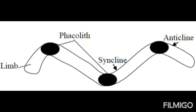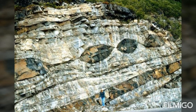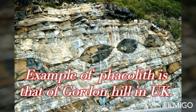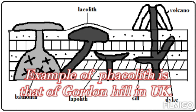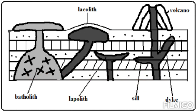The other feature is the phacolith. The phacolith is an intrusive feature found in both anticline and syncline structures. It is formed when the magma cools and solidifies in both anticline and syncline settings. This feature is formed in Golden Hill in the United Kingdom.